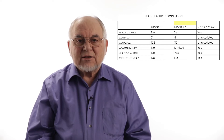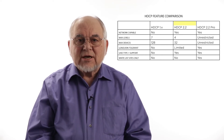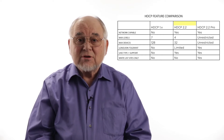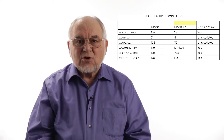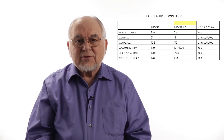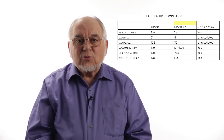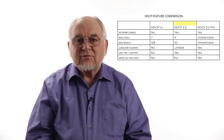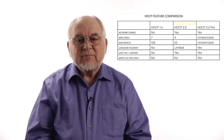HDCP 2.2 does allow for support of networks and does allow for Type 1 content, but because of its topology limits, it can only serve up to 32 devices total, of which the source and the network repeater count toward that total, so you typically have fewer than 15 or so screens involved in the actual deployment.